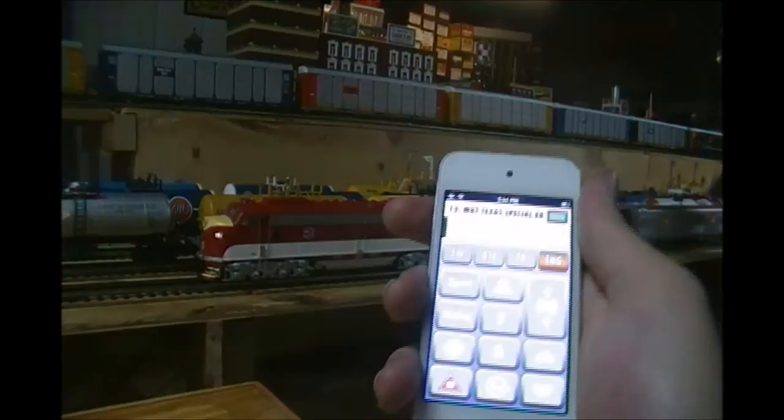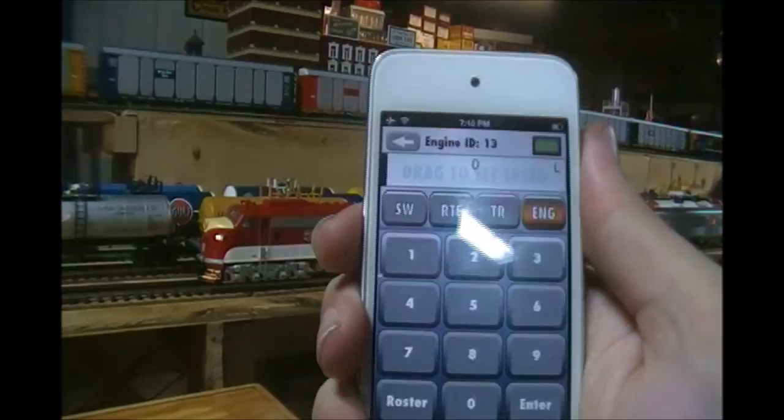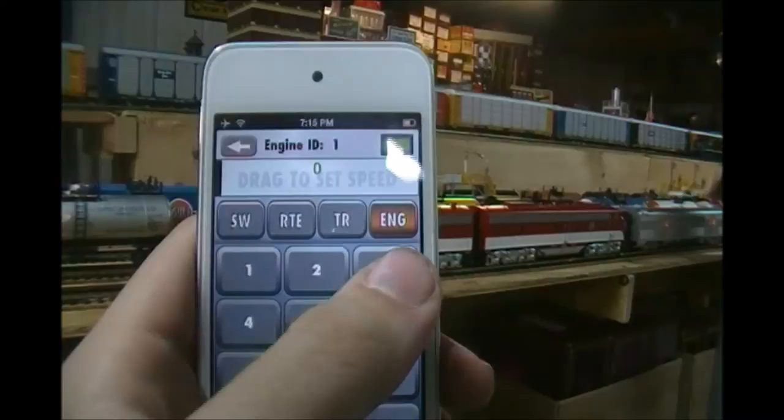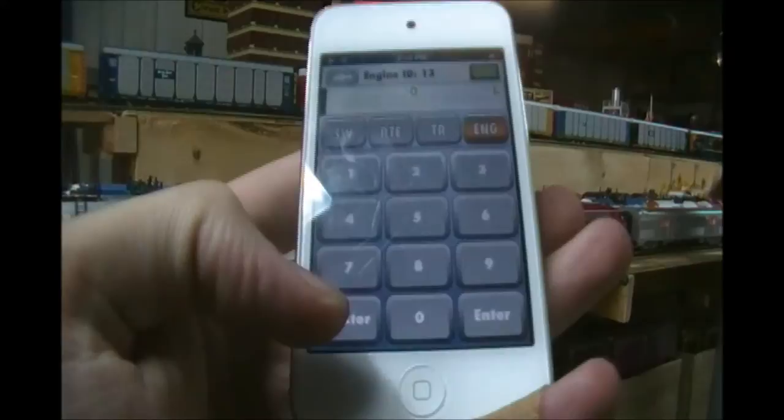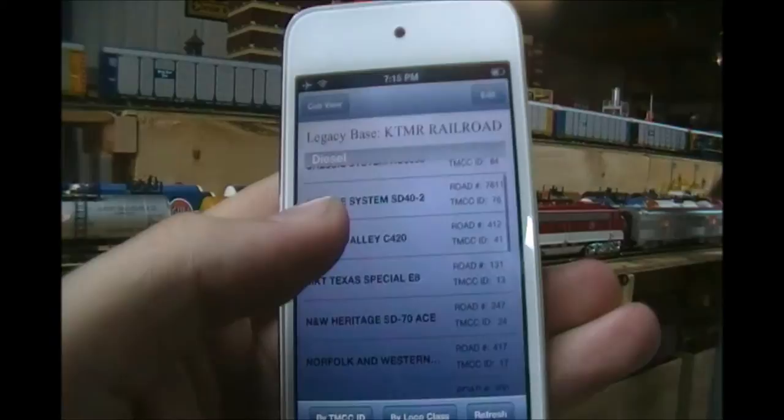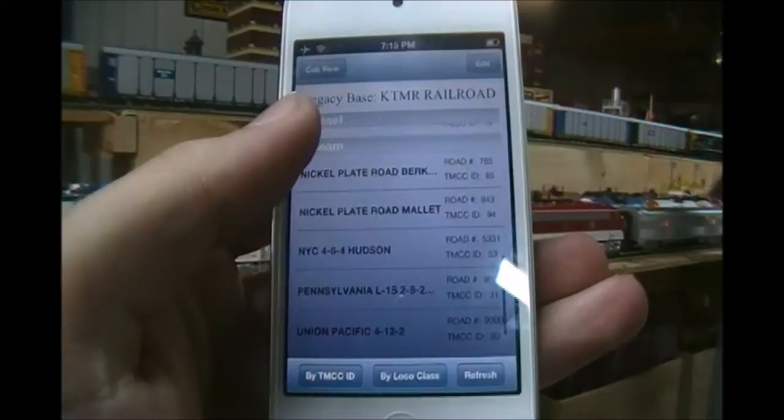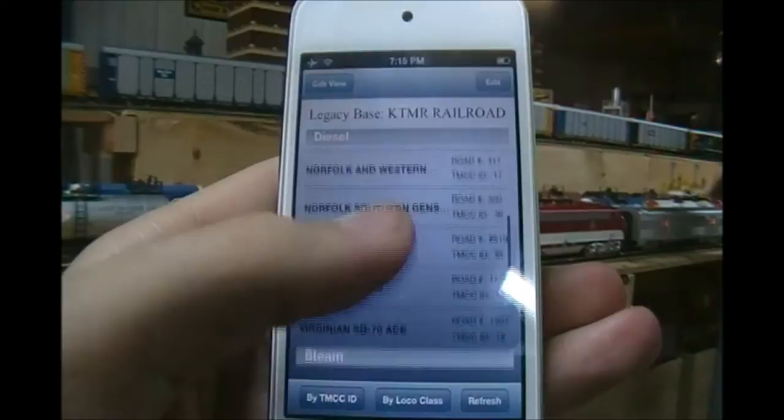So to start, we're going to start by punching in the ID of the locomotive. In this case, it's 13 so we're going to punch in 1, 3 and then we're going to hit enter. Now one thing before I do this is that you have a roster button. If you click on that, you can see all the engines. They're listed by the types including diesel and steam. You can sort them by the ID number or by the local class, which that's pretty cool.